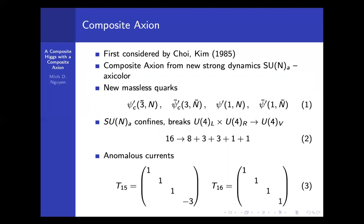For the model to solve the strong CP, they include a massive axi-quark in the UV. This includes a pair, a vector pair of bifundamental axi-quark and another pair of axi-quark that charge only under the axi-color.